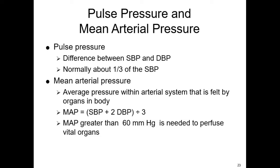The pulse pressure is the difference between the systolic and diastolic blood pressure, and is important because there are times we might see a narrowing or widening pulse pressure. The normal pulse pressure is about a third of the systolic blood pressure. The mean arterial pressure is calculated as one systolic plus two diastolic, all divided by three. We target a MAP of 65, but we will accept 60 or better to ensure perfusion of vital organs.